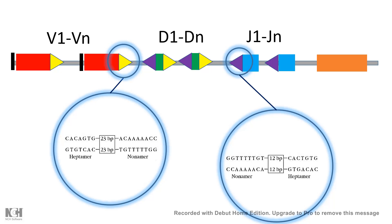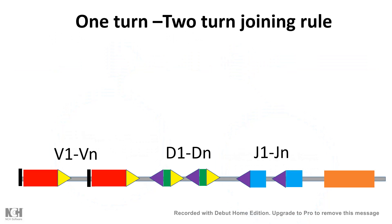These signal sequences are known as one-turn or two-turn sequences. One-turn sequences have 12 base pair spacers, whereas two-turn sequences have 23 base pair spacers. There's a joining rule: opposite turns can join together—a one-turn sequence can join with a two-turn sequence, but similar ones cannot join with each other.